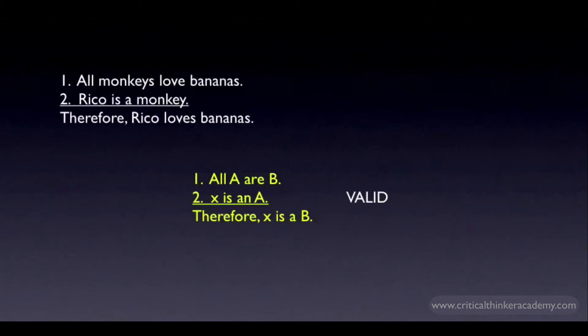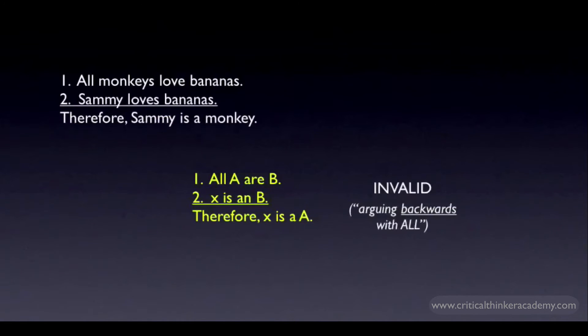Here's an example of arguing backwards with all. All monkeys love bananas. Sammy loves bananas. Therefore, Sammy is a monkey. This is obviously invalid. If you grant that all monkeys love bananas, and you grant that Sammy loves bananas, there's no reason to think that Sammy has to be a monkey. Lots of things other than monkeys love bananas.